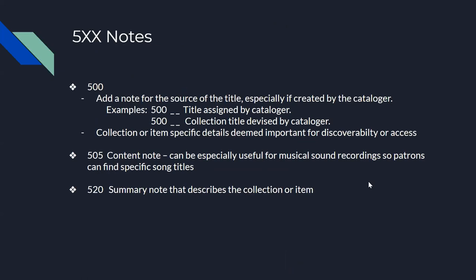For notes, you should include a note for the source of the title, specifically for those created by the cataloger, as well as other collection or item specific details that increase discoverability and access. Content notes can be especially useful for musical sound recordings to help patrons find certain songs, titles, or performers. This has been extremely helpful in practice with musical sound recordings.